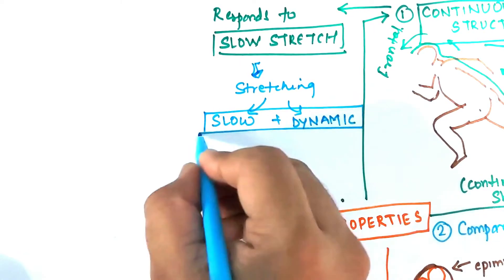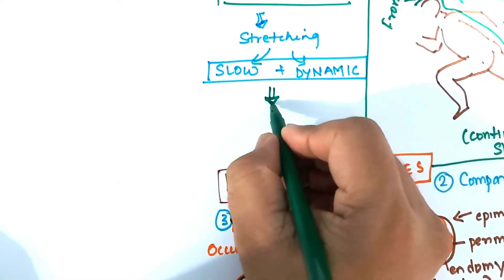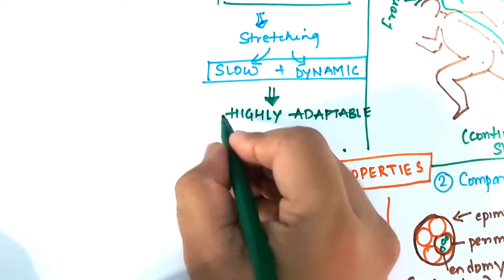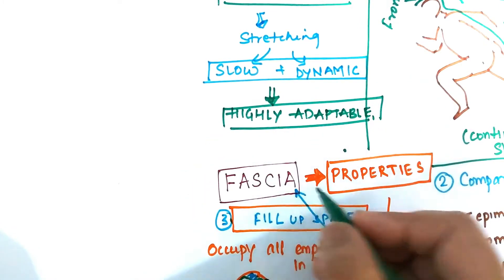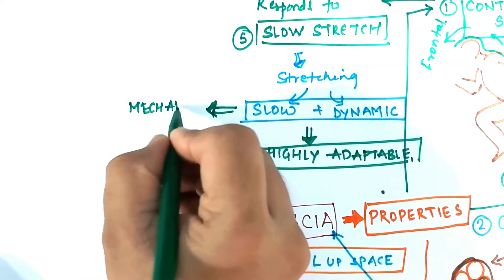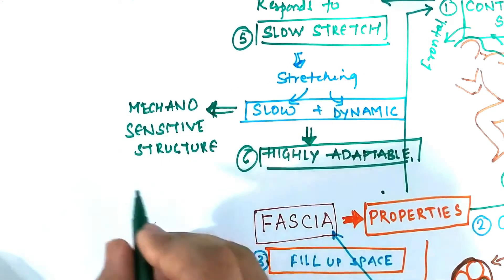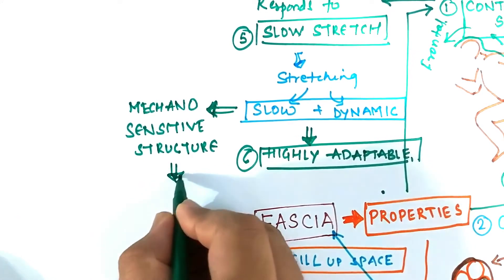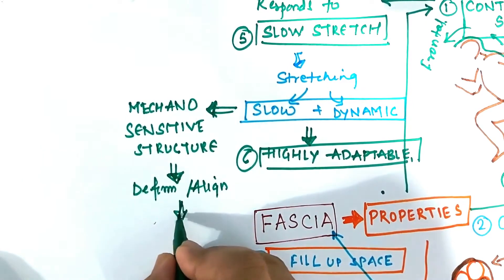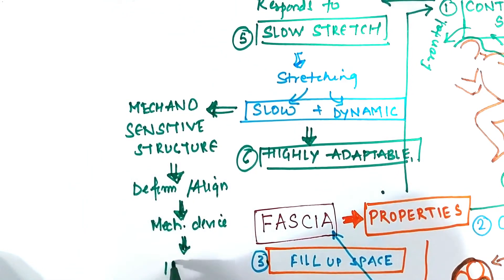Another unique property fascia has that it is highly adaptable to various environmental conditions and state, whether internal or external stress or strain. Fascia is also a mechano-sensitive structure. So any form of mechanical stimuli in the form of a hand or a device or a stainless steel instrument will help to target the fascia, deform or align it, also helps to elongate the structure.